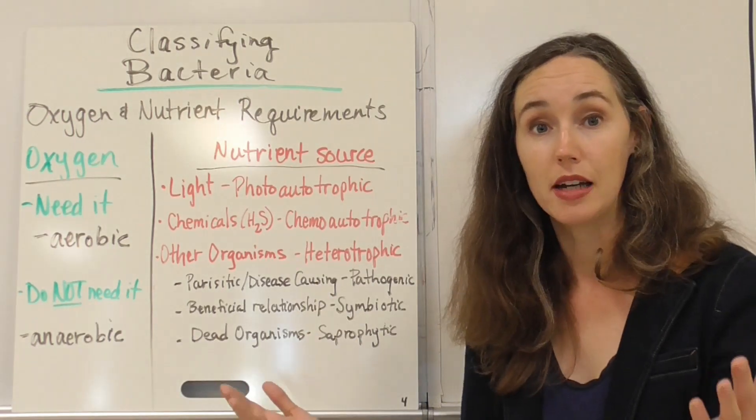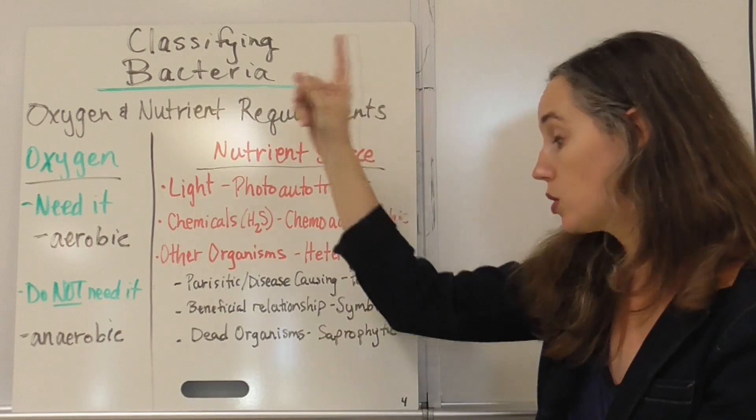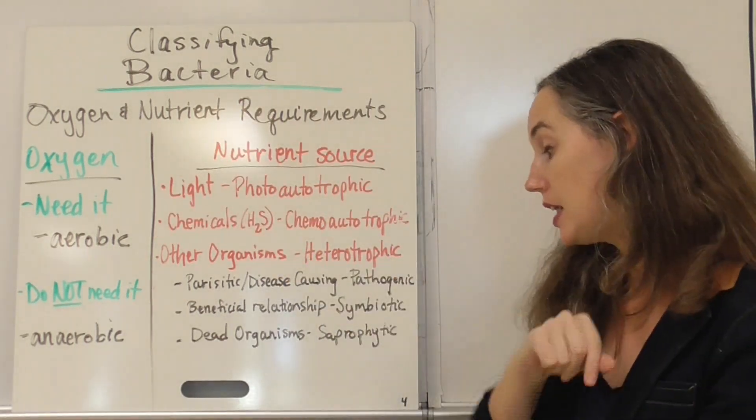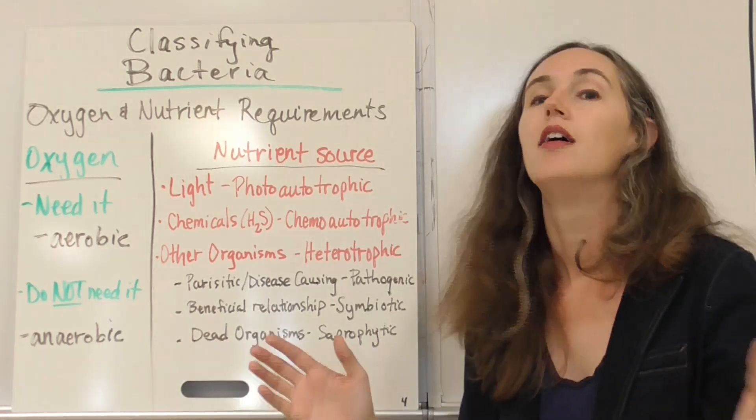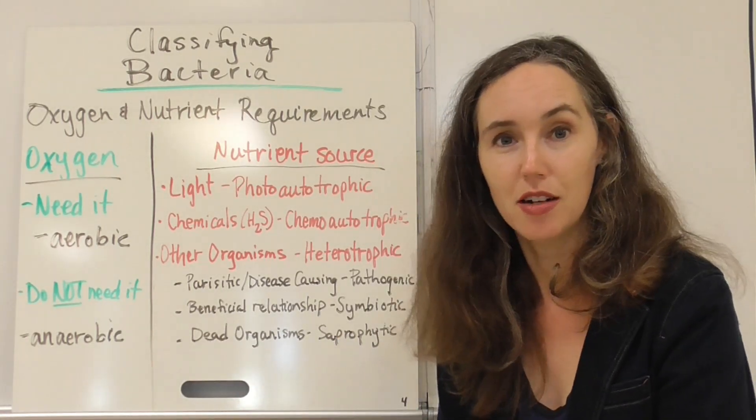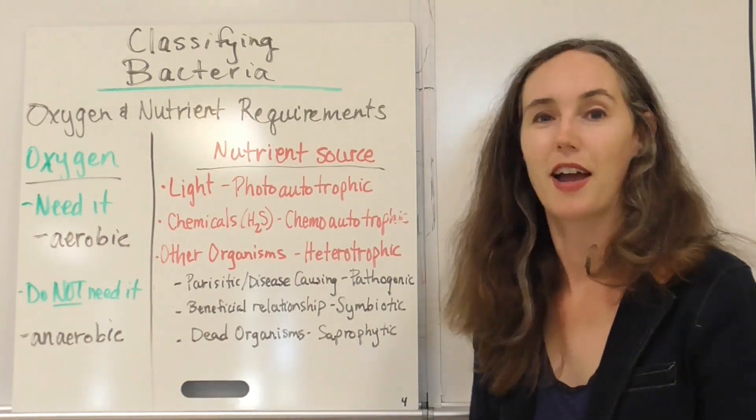So that's four ways. Four ways to classify bacteria by nutrient source, whether or not they need oxygen, cell wall composition, gram positive or negative, and their shape. Next time you come across the bacteria, maybe you can figure out all the different ways that you could classify it.